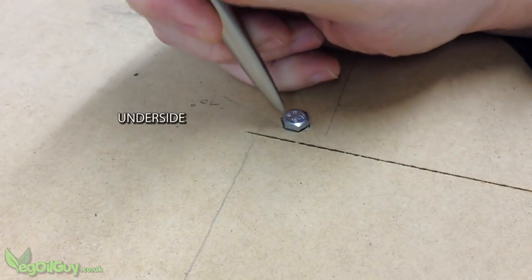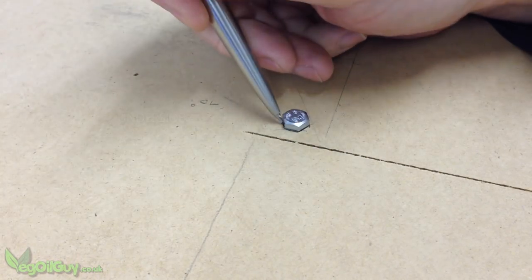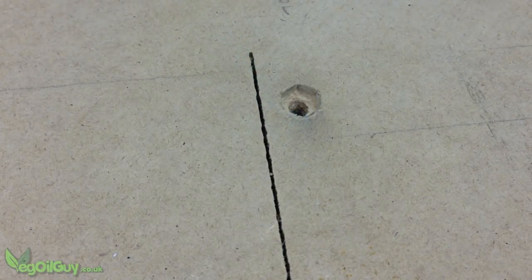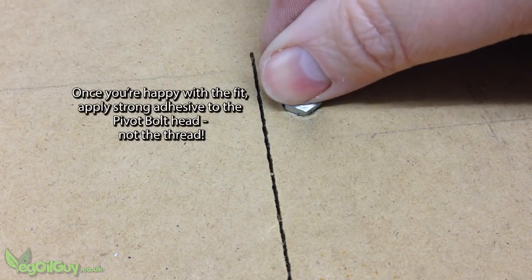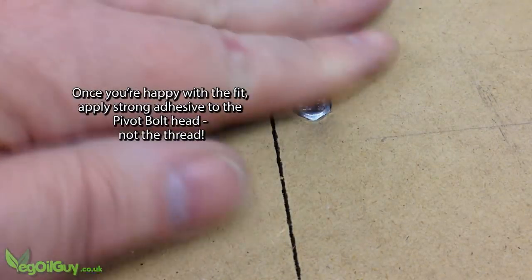Still on the underside, the head of the bolt was outlined and a hole was chiselled to receive the bolt head. The head needs to fit flush and it was bonded with adhesive, taking care not to get any glue on the thread.